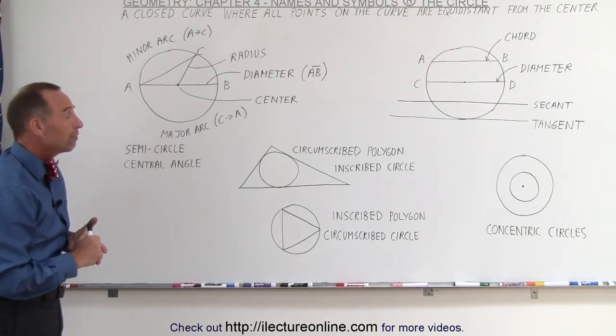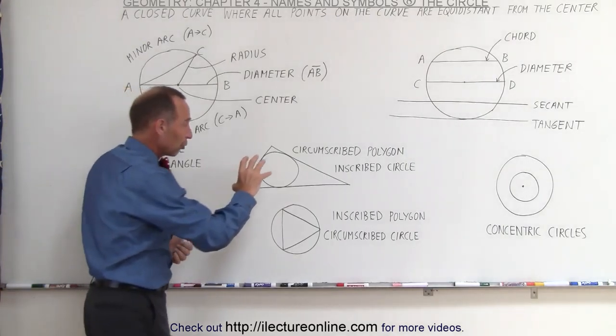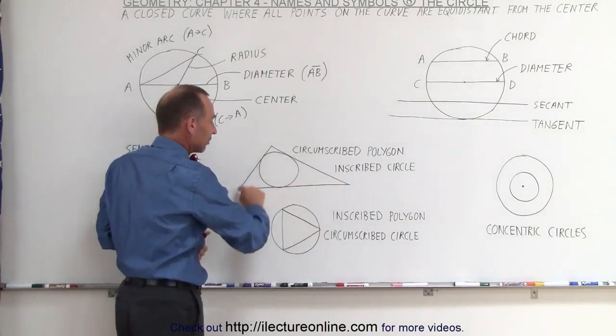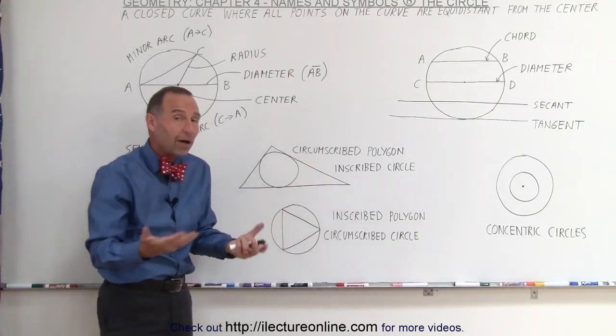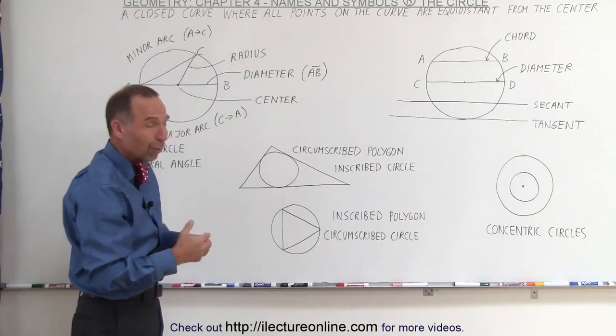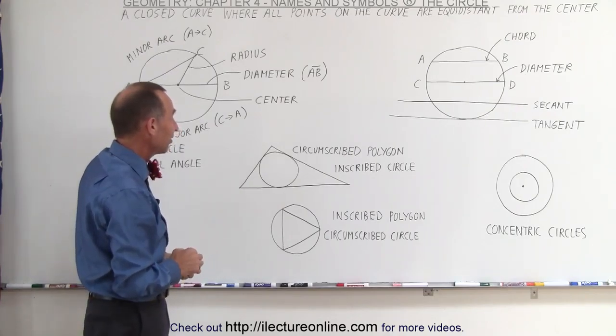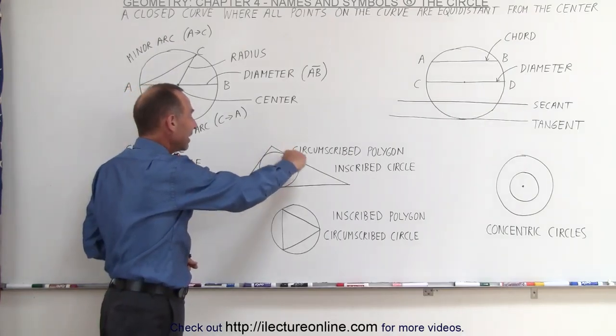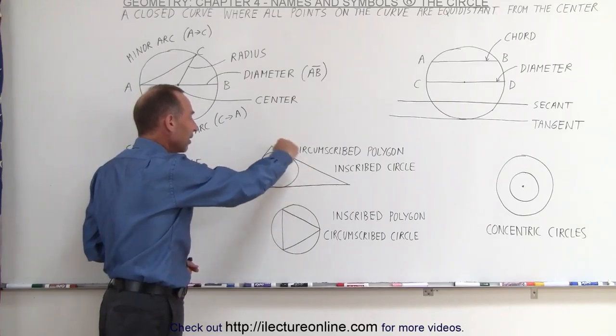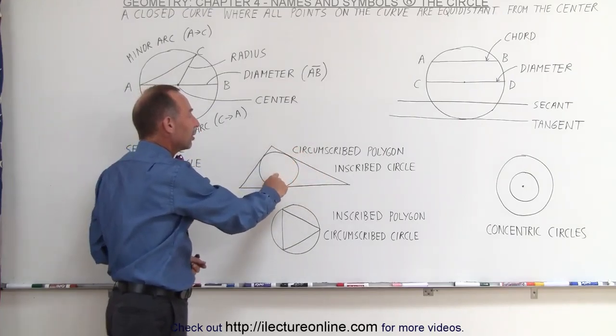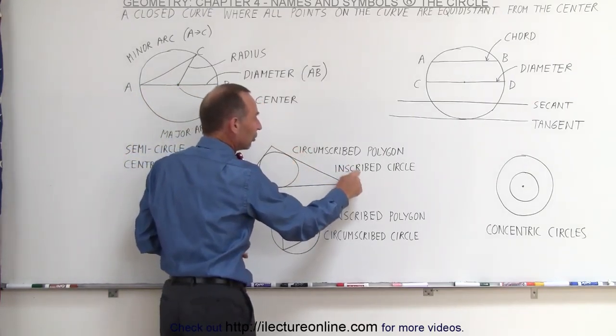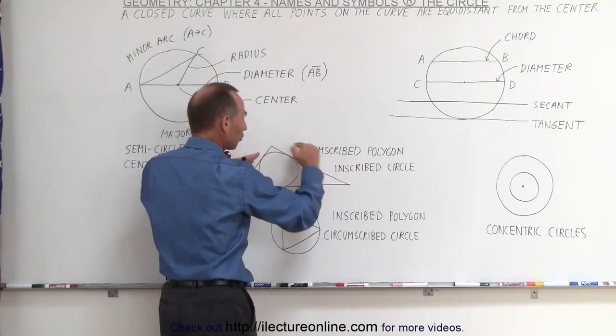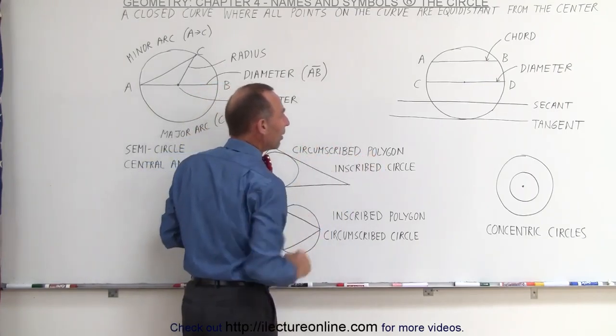Some other naming conventions we should be familiar with: if we draw a circle inside here, this triangle, or we can also call it a polygon because it has many sides, more than two sides here, three sides in this case. You can see here that the circle is inside the polygon. Therefore we call that an inscribed circle, and the polygon which goes around the circle is called the circumscribed polygon.